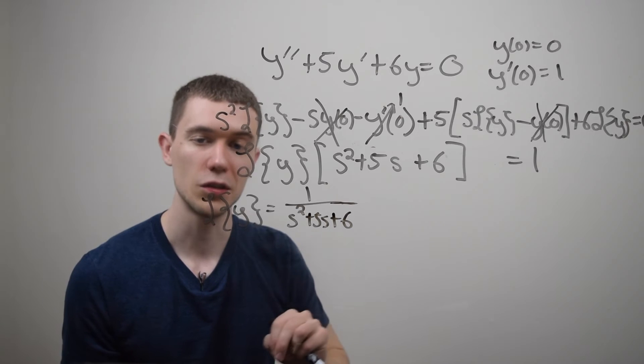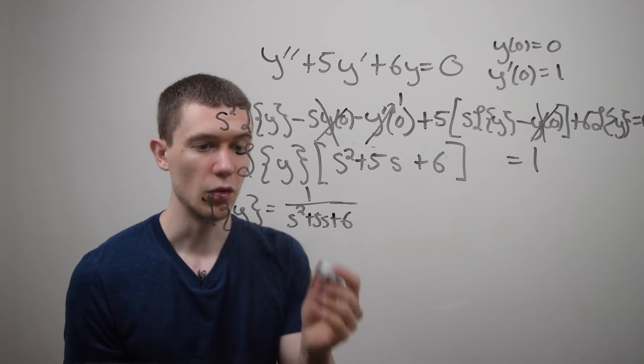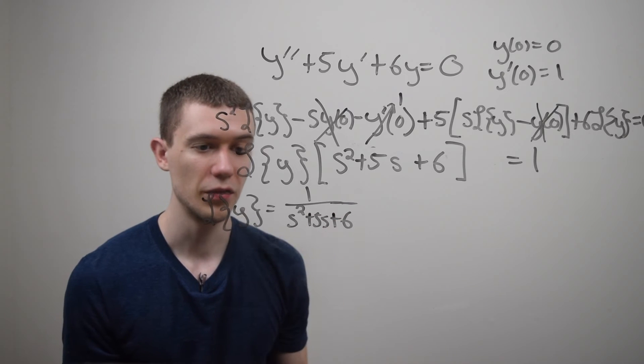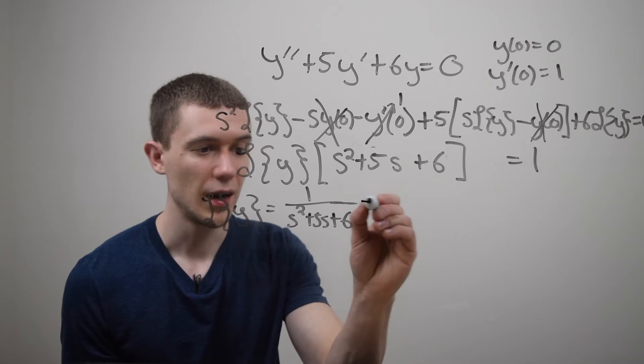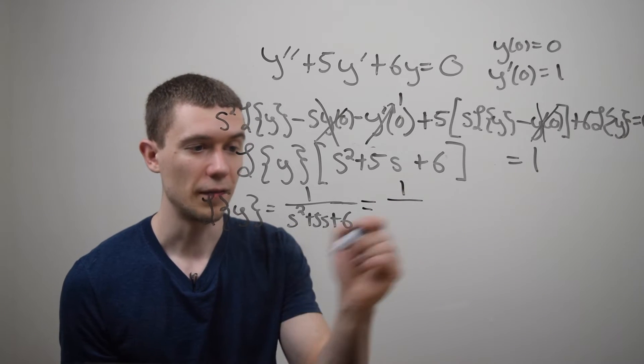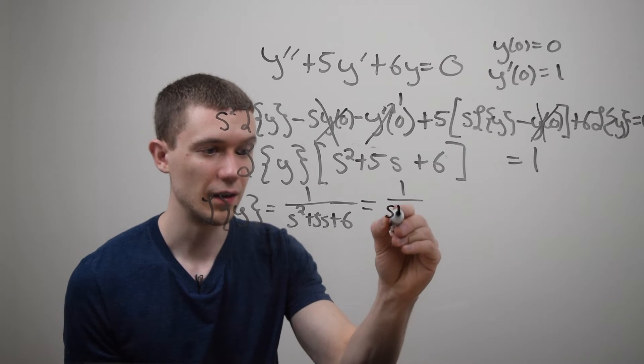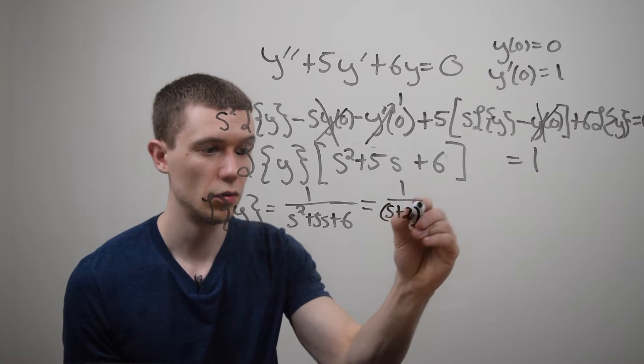And now if I can take the inverse Laplace of both sides, that'll give me my answer. So how can I take the inverse transform of this? I'm going to have to factor it and split it up using partial fractions. So if I factor this, two numbers that multiply to six and add to five, I think two and three do it.